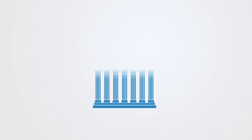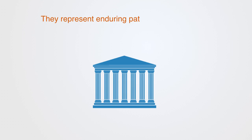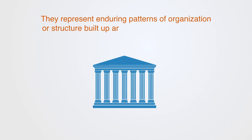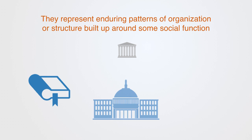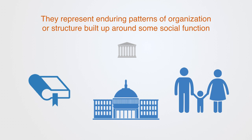Social institutions are a central object of study within the social sciences. They represent enduring patterns of organization or structure built up around some social function. Religions, governments and families are all institutions that have stood the test of time because they provide essential structure and serve basic functions within social systems.